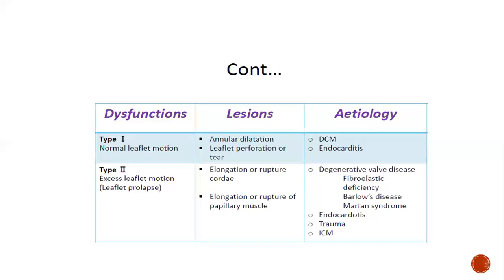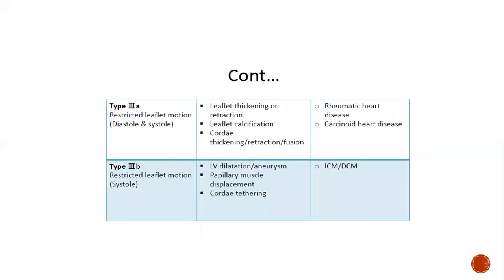Post-tricuspid conditions causing LA and LV volume overload can cause annular dilatation, which usually recovers when the LV size reduces. Type 3a involves restricted leaflet motion in both systole and diastole, with associated leaflet thickening, retraction, calcification, or fusion of chordae, generally seen in rheumatic heart disease or carcinoid heart disease. Type 3b involves restricted leaflet motion in systole only, associated with LV dilatation, aneurysm, papillary muscle displacement, or chordal tethering, generally seen in ischemic cardiomyopathy or dilated cardiomyopathy.